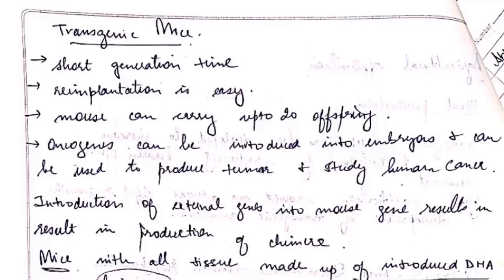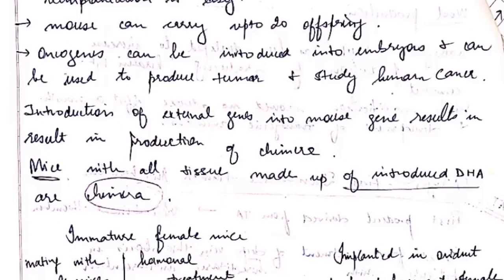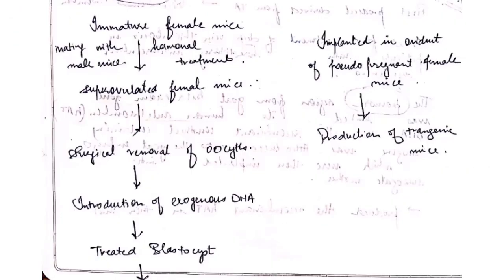The most common example of a transgenic animal is the mouse, the most widely used animal for testing, because it has a short generation time and can carry up to 20 offspring. Oncogenes can be introduced into embryos to produce tumors. The transgenic mouse can be produced by two ways: embryonic stem cell method and chimeric mouse. The basic steps involve taking an immature female mouse, super-ovulating it, then surgically removing the oocytes.